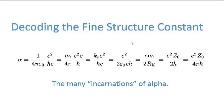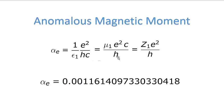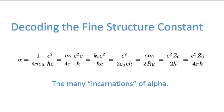To recap: we went from decoding the fine structure constant to actually decoding the anomalous magnetic moment, where the anomalous magnetic moment can now be evaluated using these three terms — one in terms of permittivity, one in terms of permeability, and one in terms of the impedance of free space. This is the value those three terms evaluate to: the anomalous magnetic moment, which is alpha divided by 2π.